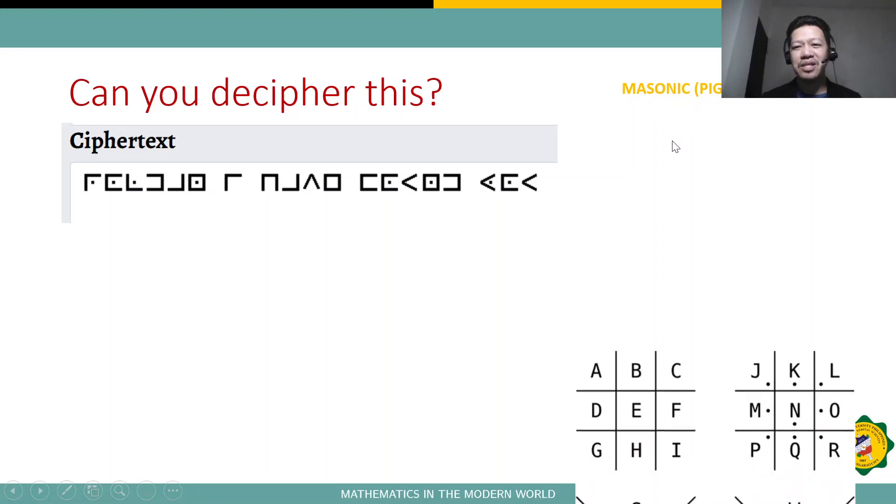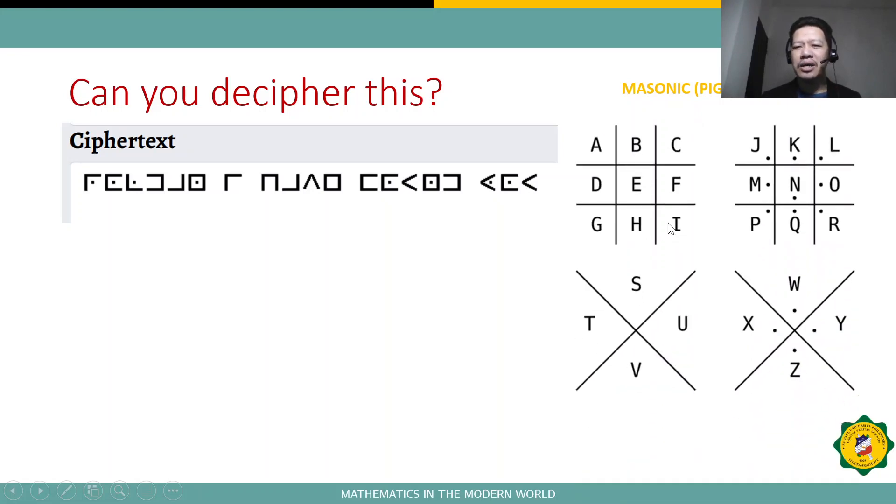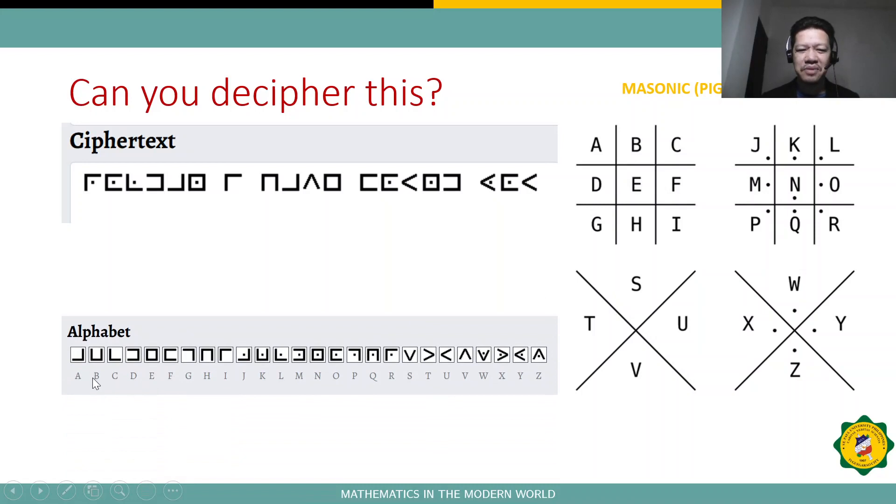So, in the Masonic cipher, we're going to use these figures. How to understand these figures or ciphers? For letter A, that will be in this form. Letter B, C, and as you can see here, that's C, and then this is for D. E will be a square, as you can see it here in the alphabet from A to Z. So, that's how to read this ciphertext.